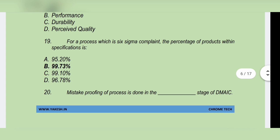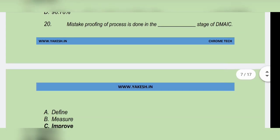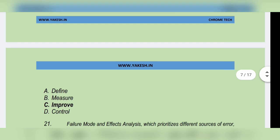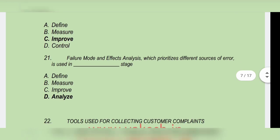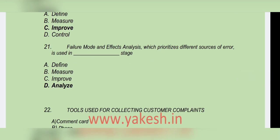For a process which is 6-sigma, the percentage of product within specifications is — Option B: 99.73% is the correct answer. Mistake proofing of a process is done in the — Option C: Improve stage of DMAIC. Failure mode and effects analysis, which identifies different sources of error, is used in the — Option D: Analyze stage.